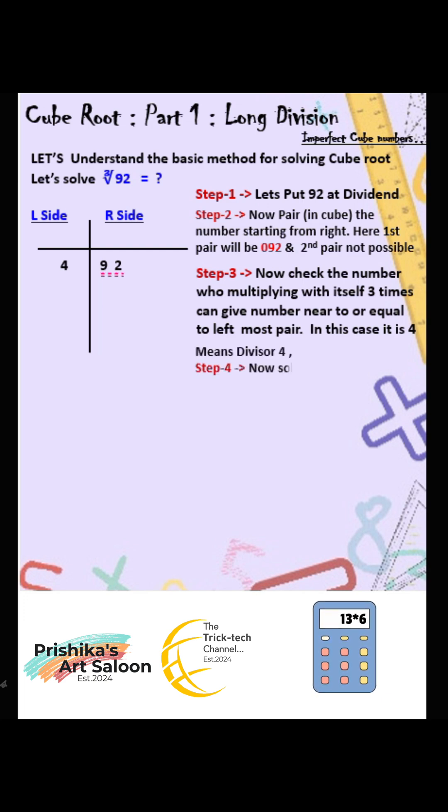Step 4: Now solve it. 4 into 4 into 4 equals 64. Result is 64. Also write quotient under divisor two times more. Now simplify as shown.